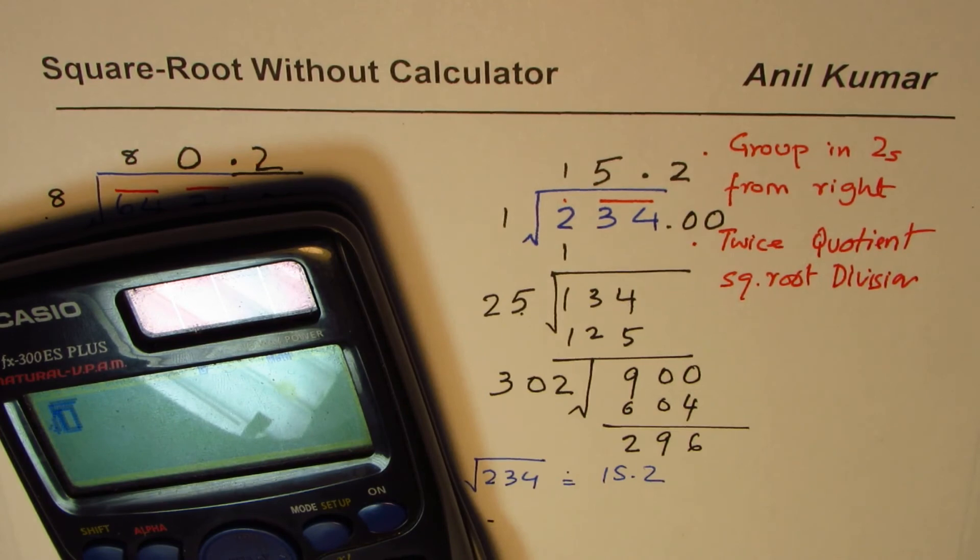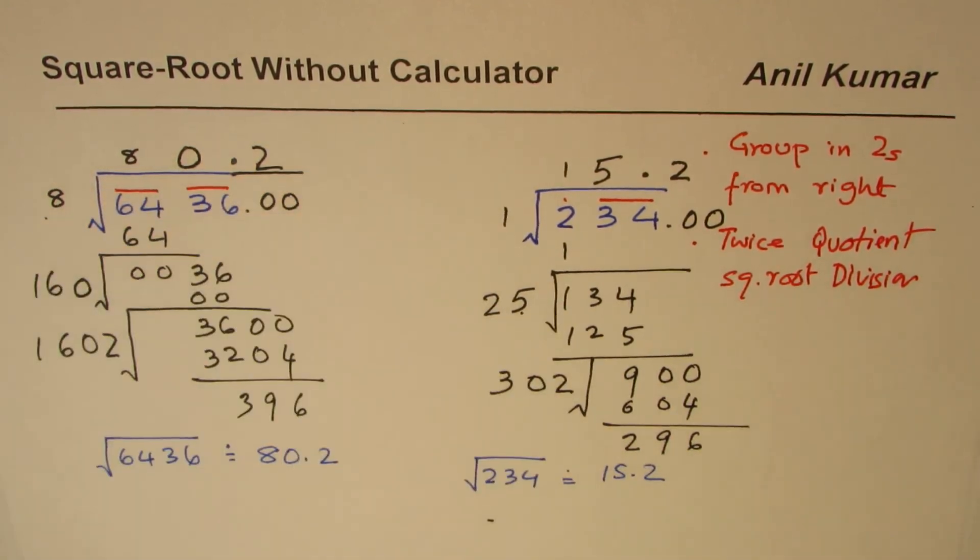So we're doing square root of number 234 which is equal to in decimals 15.29, very much the answer which we expected. So I hope with this you completely understand this special process of division which can help you find square root without calculator.